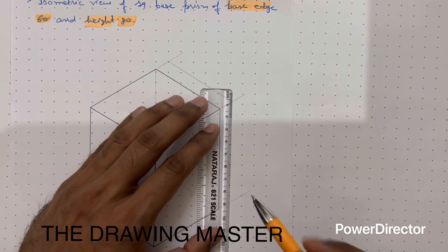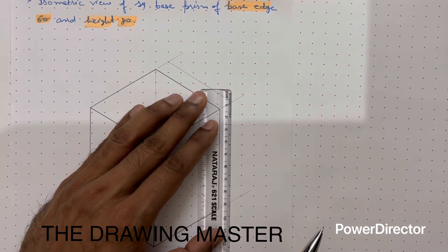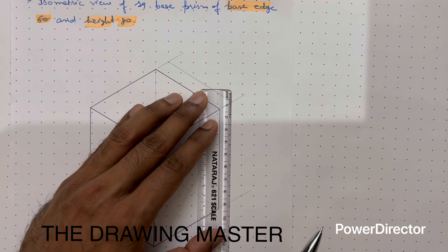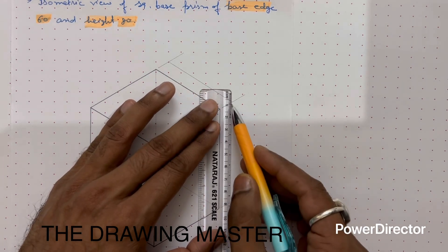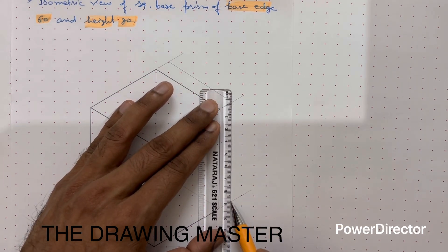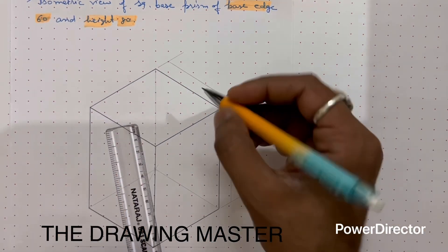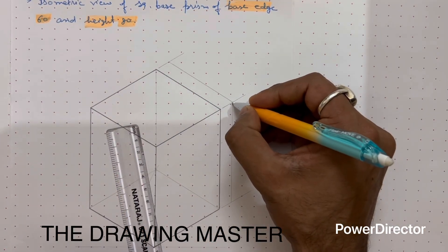This is height, so height should be always a vertical line. Here you can write the dimensions of the object.